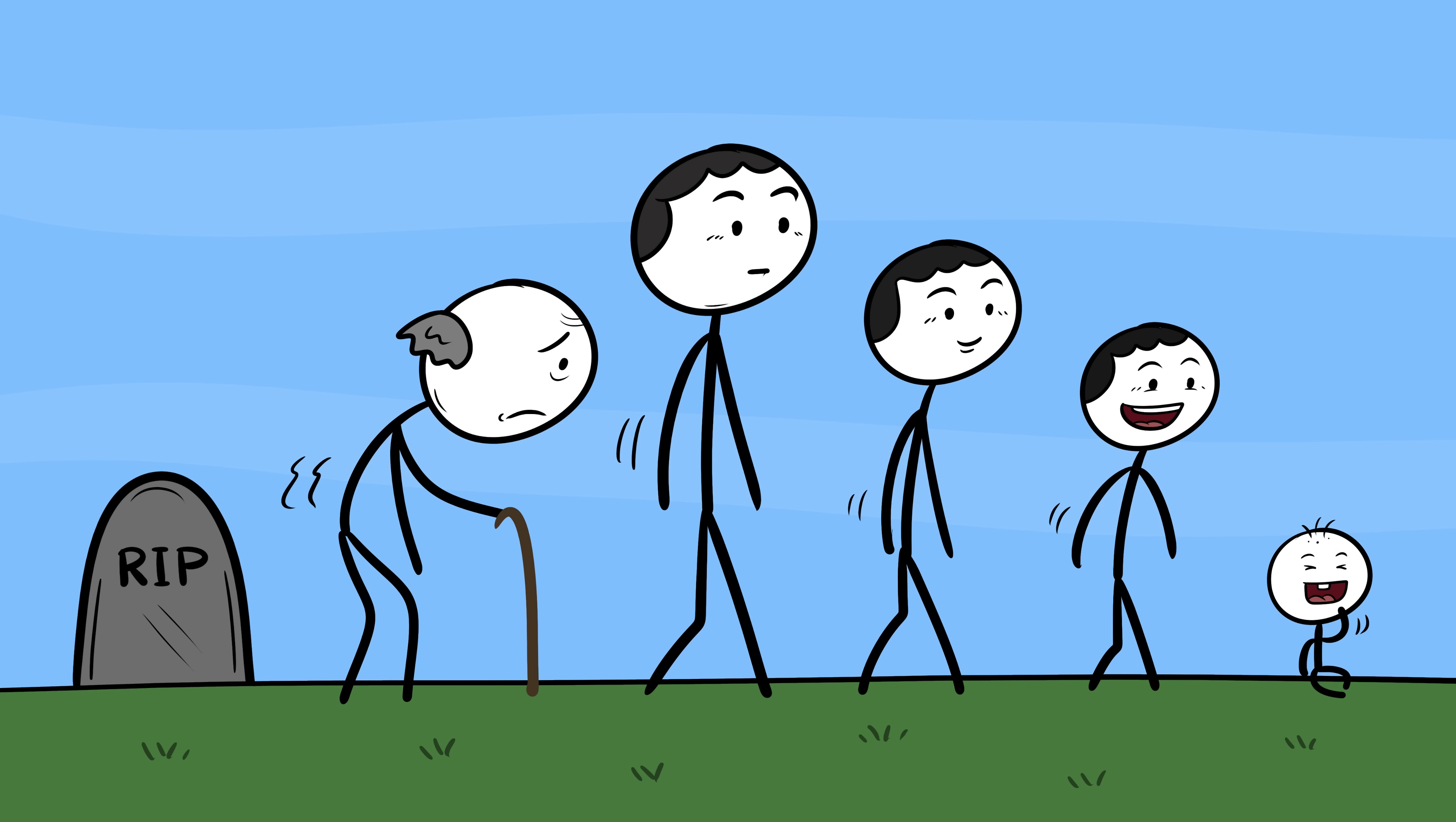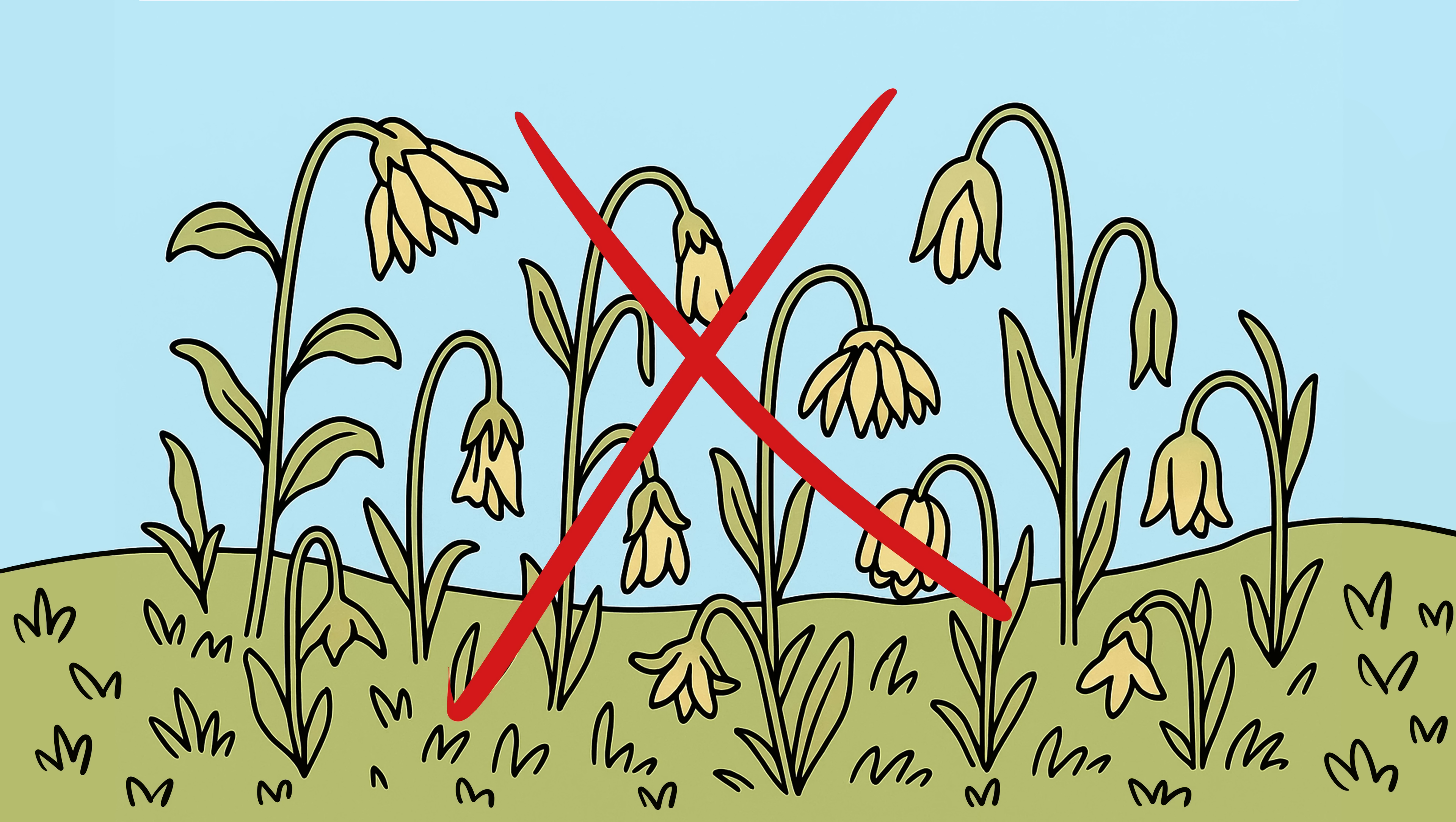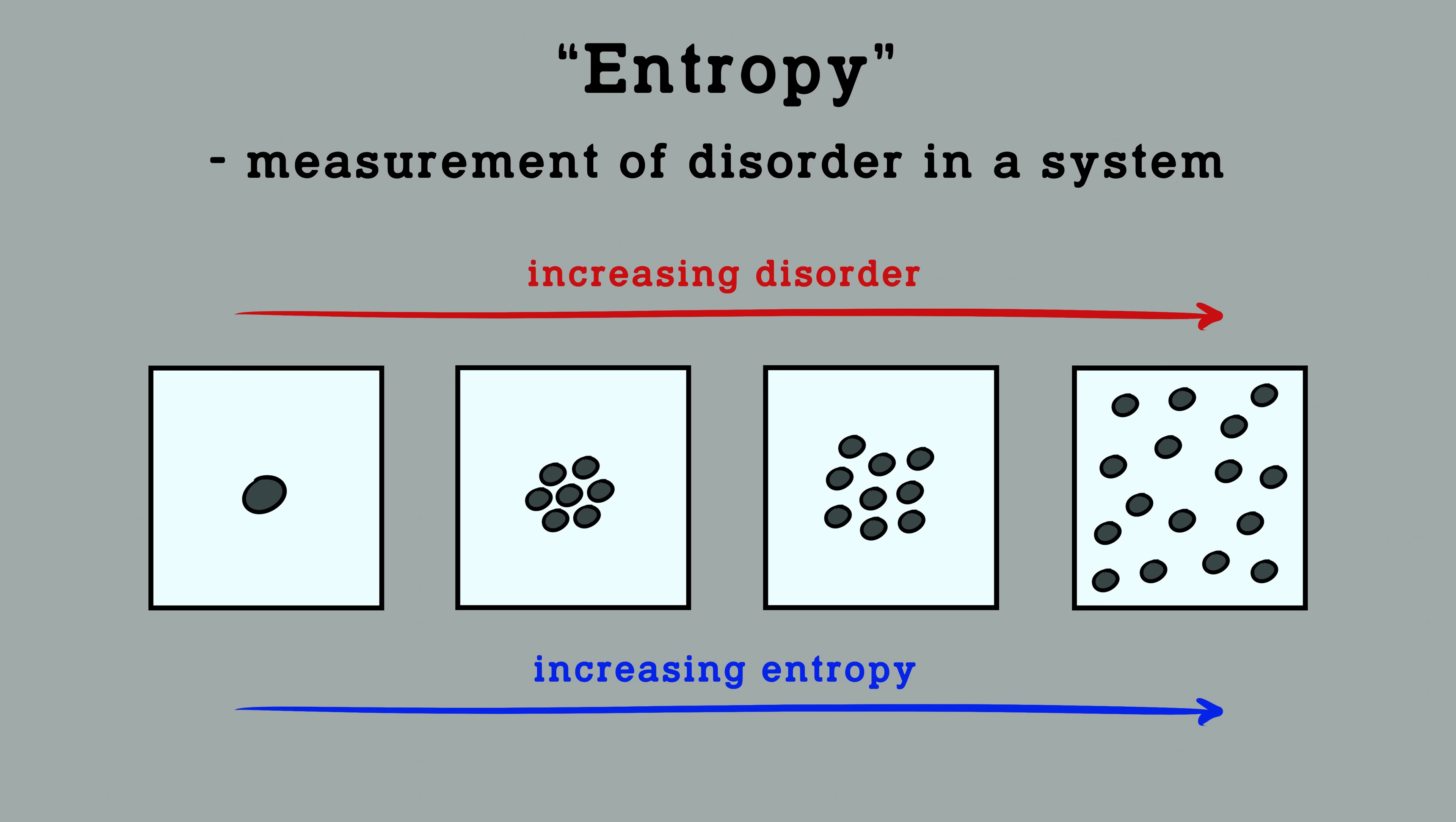But we don't experience life in reverse. Coffee doesn't jump back into the cup, and dead plants don't unwilt. Physicists think this arrow of time comes from entropy, the idea that disorder always increases, but even that explanation feels like a patch on a much bigger mystery. If time isn't fundamental, then everything that ever was or will be might already exist, frozen together in one gigantic block of reality. We're just sliding through it like a needle through a record, experiencing one track at a time.